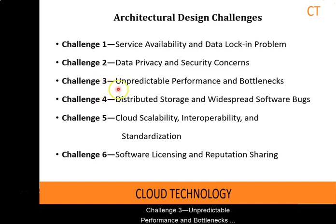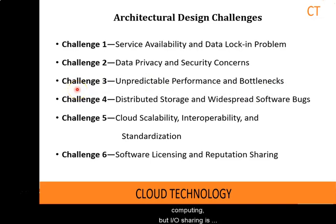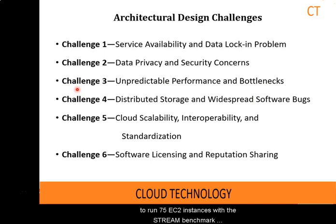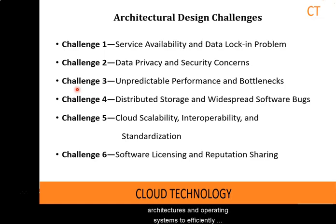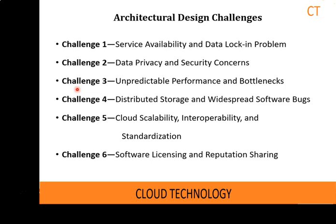Challenge 3: Unpredictable Performance and Bottlenecks. Multiple VMs can share CPUs and main memory in cloud computing, but IO sharing is problematic. For example, to run 75 EC2 instances with the stream benchmark requires a mean bandwidth of 1355 MB per second. However, for each of the 75 EC2 instances to write 1 GB files to the local disk requires a mean disk write bandwidth of only 55 MB per second. This demonstrates the problem of IO interference between VMs. One solution is to improve IO architectures and the operating system to efficiently virtualize interrupts and IO channels.